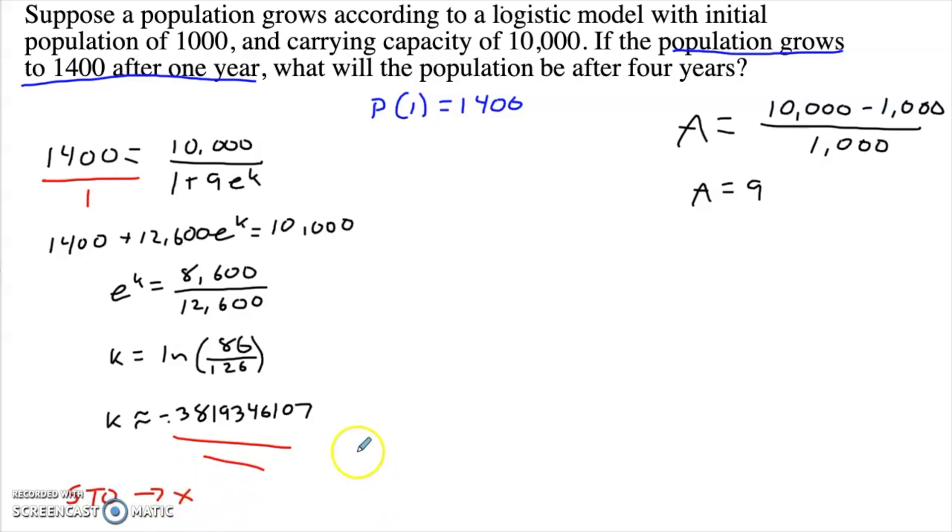I would suggest just storing them in your calculator. I usually just store them as x. And then I can just pull it up quickly later. Then you're just going to plug back into the original equation. So we know the population after four years is going to be 10,000 over 1 plus 9e^(4k). And plugging that in the calculator, we get p of 4 is approximately 3386.